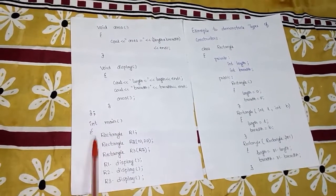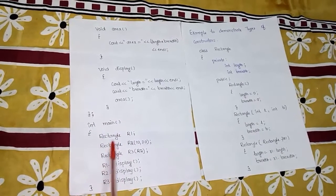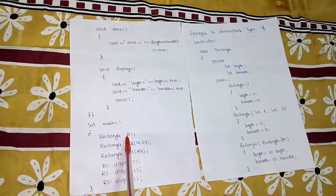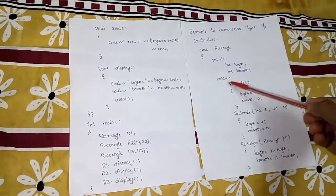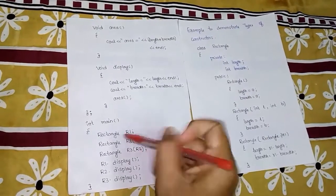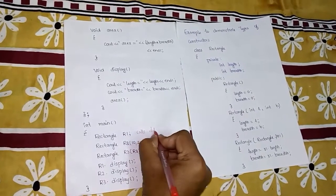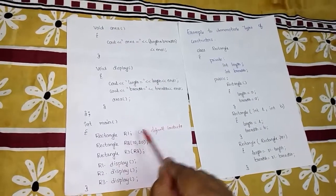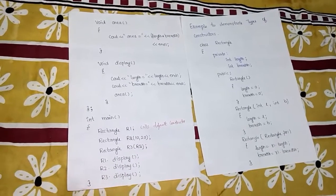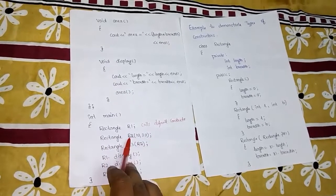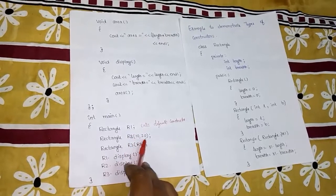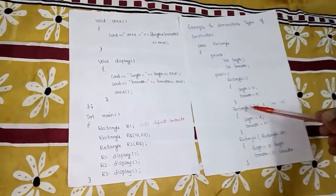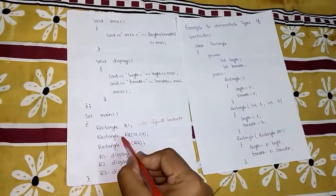In main, the first line 'rectangle r1' creates object r1 with no arguments, so it directly calls the default constructor. Next, 'rectangle r2(10, 20)' provides two arguments — it checks for a constructor with two parameters, finds the parameterized constructor, and calls it. Then 'rectangle r3(r2)' passes object r2 as an argument, which calls the copy constructor to copy r2's values into r3.